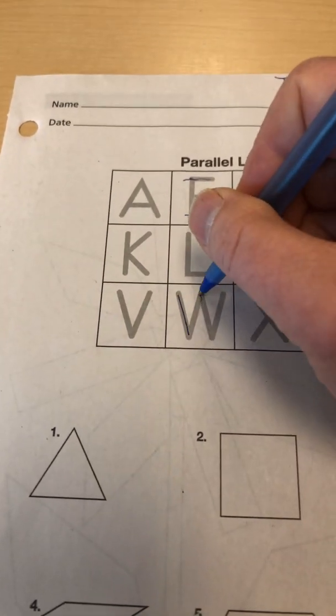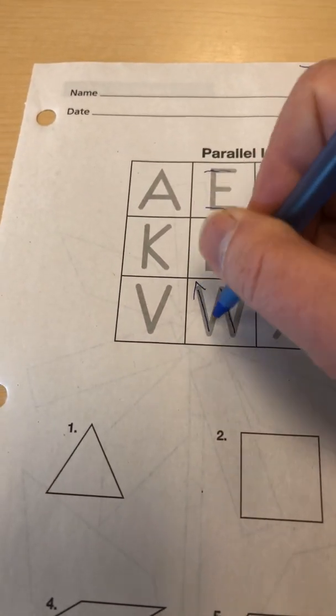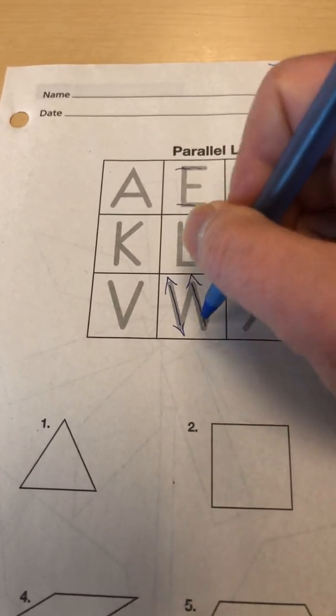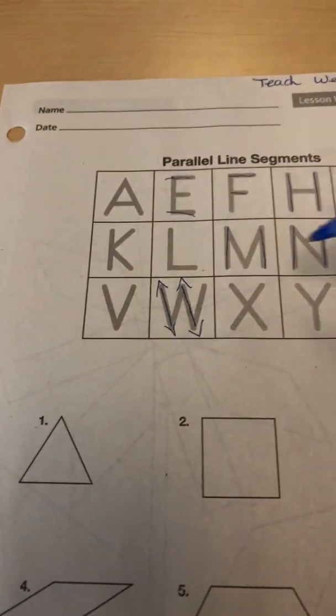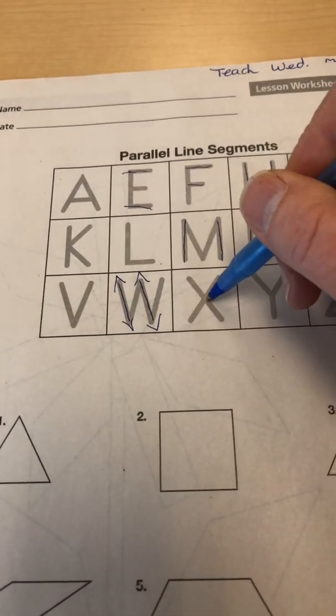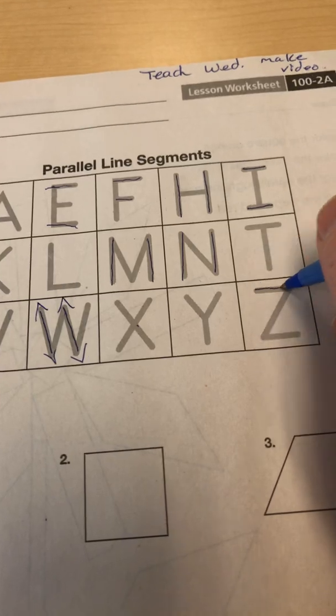T doesn't work, but W does. Remember those are the oblique lines. I'm going to put arrows on that so you can see it. The X, they cross, so that doesn't work, but the Z works.